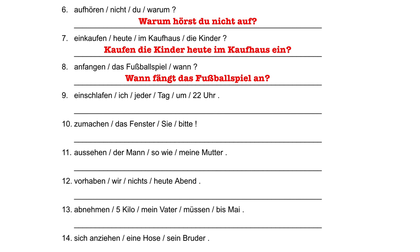In number nine, schlafen is the verb we conjugate. Ich is the subject, so we start with ich and then our conjugated verb schlafe. Then we put ein at the end of the sentence. So we say: Ich schlafe jeden Tag um zweiundzwanzig Uhr ein — I go to sleep at 10 o'clock p.m. every day.